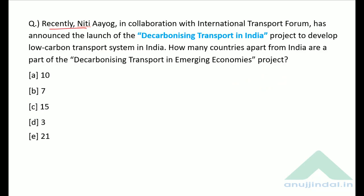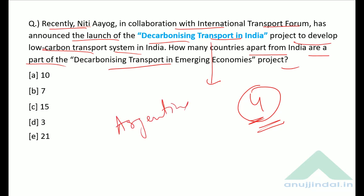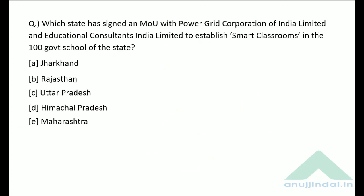NITI Aayog, in collaboration with the International Transport Forum (ITF), announced the launch of Decarbonizing Transport in India. How many countries apart from India are part of this project? There are four countries in total including India, so three countries apart from India — including Argentina. The correct answer is option D.